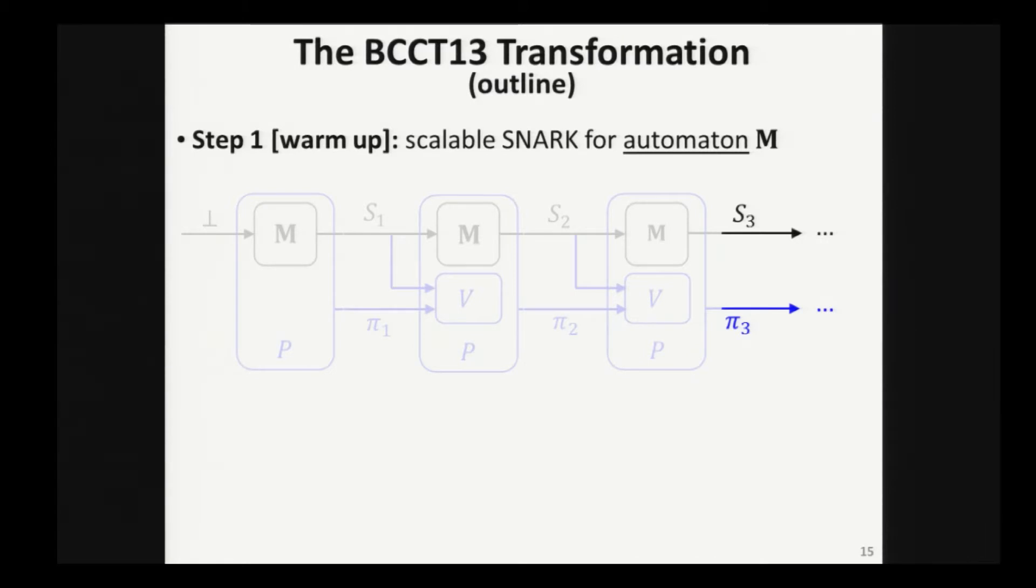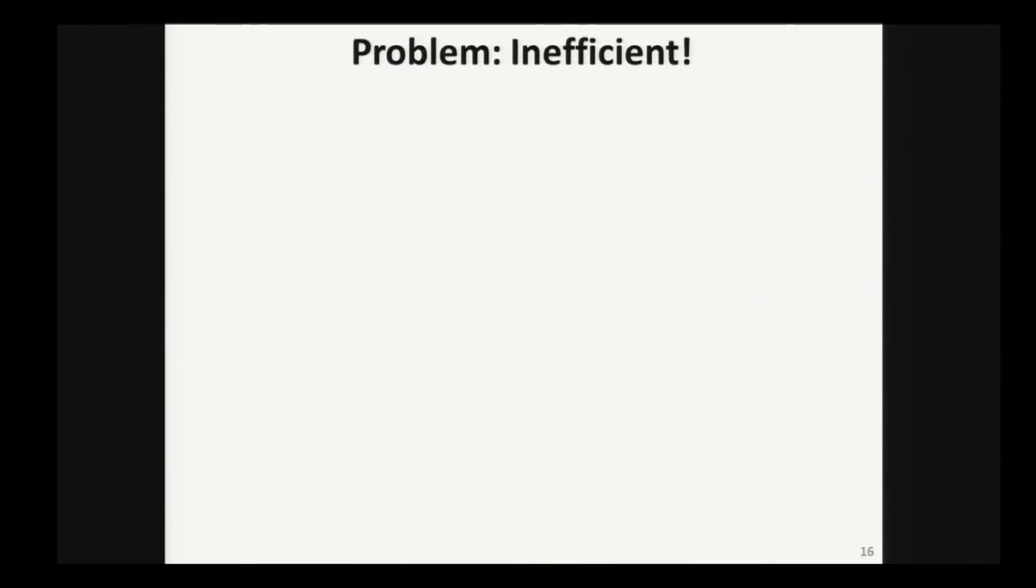Here recursive proof composition denotes the fact that the prover is reasoning about an NP statement that contains in it a computation about the proof system's own verifier. And this thing as you continue doesn't blow up because the verifier is kind of succinct, is efficient. So this is how you do it for an automaton. What happens if you have memory sitting around, maybe some tape or a random access memory? I don't want to get into it, let me just say that there is a way to reduce to step one by using collision resistant hashing. So for now, let's just focus on this recursive proof composition.